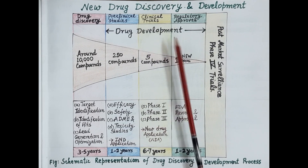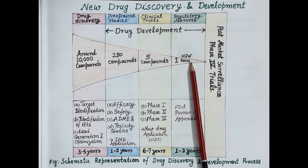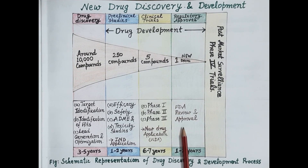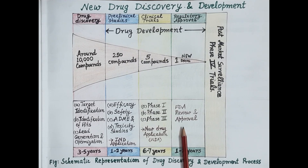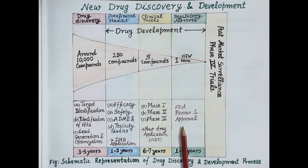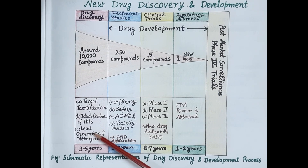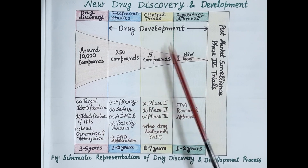After receiving approval from the licensing authority — that is the Food and Drug Administration (FDA) — the drug is manufactured at large scale and made available in the market for the treatment of a specific disease or disorder. The drug discovery process ends when lead compounds are generated and optimized, and this is followed by the process of drug development.